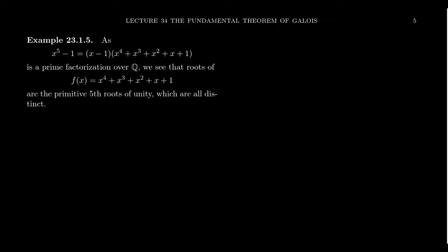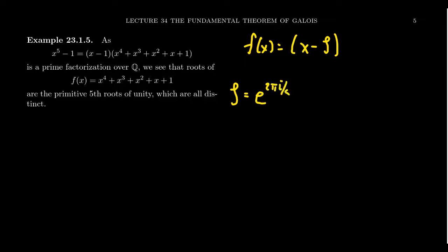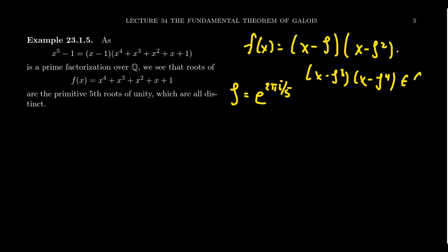As a complex polynomial, f of x will factor as x minus zeta, where zeta is the complex number e to the 2πi over 5. The other roots are x minus zeta squared, x minus zeta cubed, and x minus zeta to the 4th. This splits over the complex number field, which is algebraically closed. These are roots of unity, so the important thing to remember is that zeta to the 5th is equal to 1.